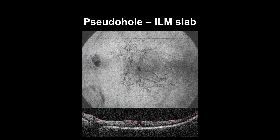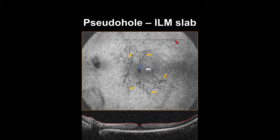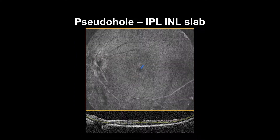In cases of pseudo-hole, the ILM slab will feature hyporeflective circles surrounded by another smooth circle, and radial folds will emanate forming a sunflower pattern. Please note the blink artifact. On the IPL-ILM slab, the pseudo-hole will appear more circular as it shows the base of the foveal verticalization.